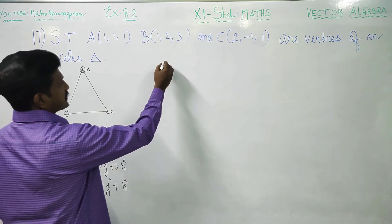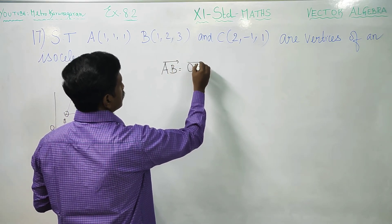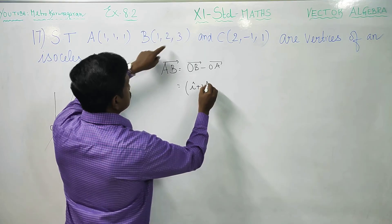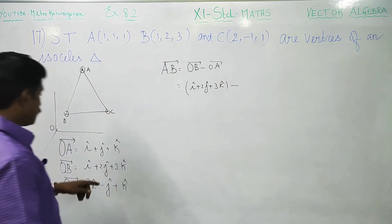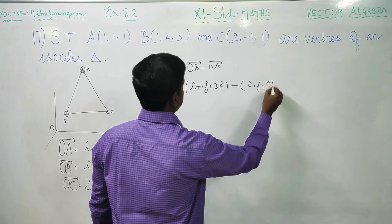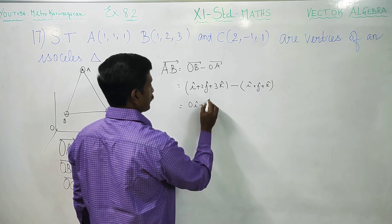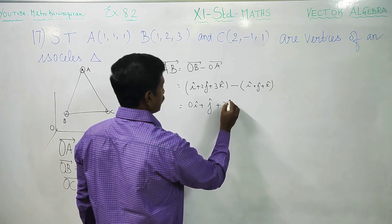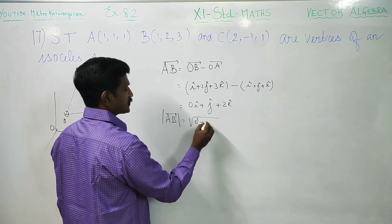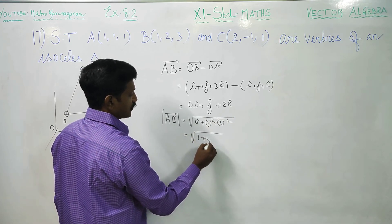First, we have to find the sides. We find AB vector. AB vector = OB − OA. OB vector is i + 2j + 3k, minus OA vector which is i + j + k. So: (1−1)i = 0i, (2−1)j = +j, (3−1)k = +2k. Now find the magnitude: square root of 0² + 1² + 2² = square root of 1 + 4 = √5.